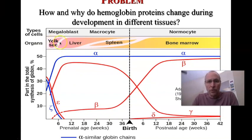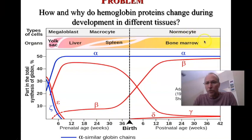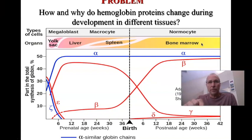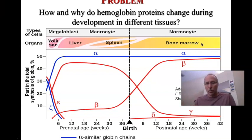Notice early on these genes are expressed in the yolk sac. Then, primarily in the early fetal stages through about the time of birth, they're expressed mainly in the liver and then later in the spleen. By the time you're in the adult condition, it's essentially all in the bone marrow. So why does this change not just in time, but also in space? That's what I want to get into — the control of these genes.